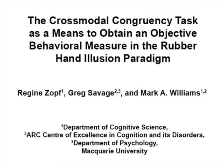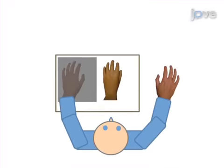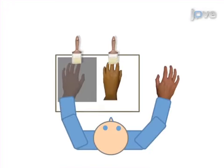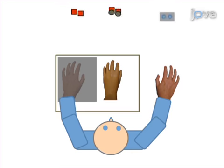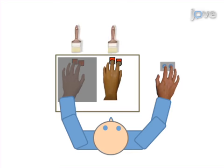The overall goal of this procedure is to use the cross-modal congruency task as an objective measure in the rubber hand illusion paradigm. First, the rubber hand illusion is induced using synchronous brush stroking of a viewed rubber hand while the participant's own hand is hidden from view. The participants are then asked to discriminate tactile targets while viewing light distractors in the so-called cross-modal congruency task.